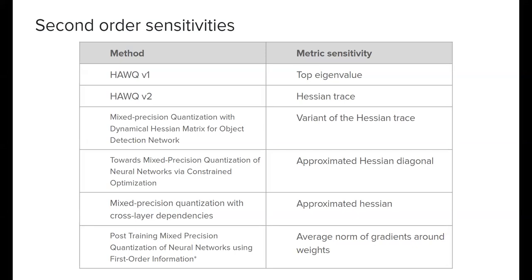The intuition for why our method is faster is fundamentally that we restrict to specific directions. Other methods compute approximations of the Hessian block corresponding to a certain layer and then multiply by the direction, requiring many more computations. In some cases other heuristics are faster than computing the full exact Hessian, but the trade-off provides valuable guarantees.